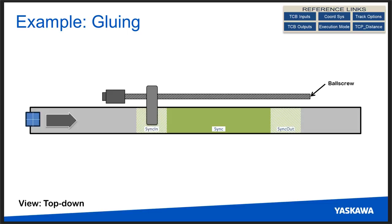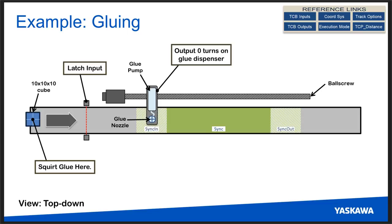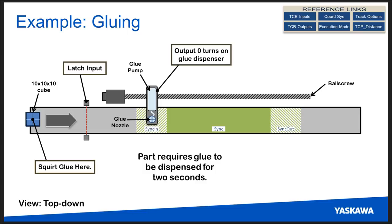In this gluing application, our part is a 10 by 10 by 10 centimeter cube. We want to squirt glue right on top as it comes by. We have a ball screw running parallel in the x-direction of the conveyor carrying a glue pump with a nozzle automatically lined up above the part along the center of the y-axis. The part will be triggered by a latch input, and once we reach the synchronization zone, we turn on an output to activate the glue dispenser for two seconds. The ball screw can travel a maximum of 300 centimeters.